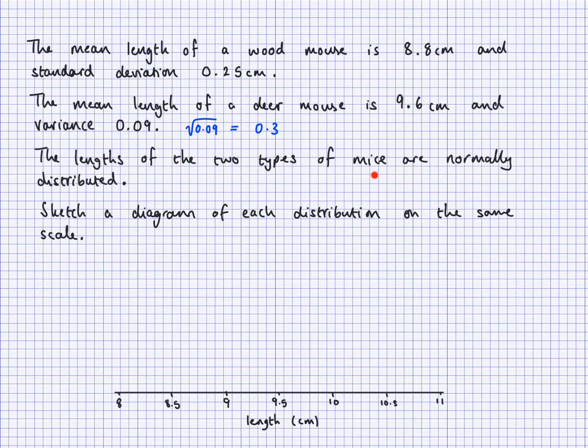The lengths of the two types of mice are normally distributed. Sketch a diagram for each distribution on the same scale. So we've got our scale here, and we need to draw a bell-shaped curve for each of these.